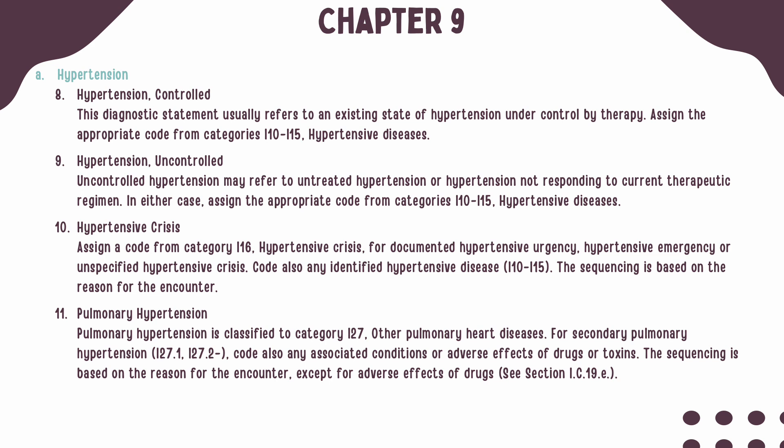Hypertensive crisis refers to a sudden and severe increase in blood pressure, and may be documented as hypertensive urgency, hypertensive emergency, or hypertensive crisis. This should be coded with the appropriate code from Category I-16. If there is an identified hypertensive disease, a code from Categories I-10 through I-15 should also be reported, with sequencing based on the reason for the encounter. Pulmonary hypertension, when blood pressure in the lungs is higher than normal, should be coded with Category I-27. If secondary, codes I-27.1 or I-27.2 should be used along with any associated conditions or adverse effects of drugs or toxins, with sequencing based on the reason for the encounter.